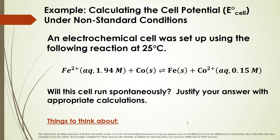Let's do an example. We have an electrochemical cell set up using this reaction at 25°C, so we can use our shortcut. We have iron 2+ cations at 1.94 molar reacting with cobalt metal to give iron metal and cobalt 2+ cations at 0.15 molar. We need to determine whether the cell will run spontaneously and justify our answer with appropriate calculations.